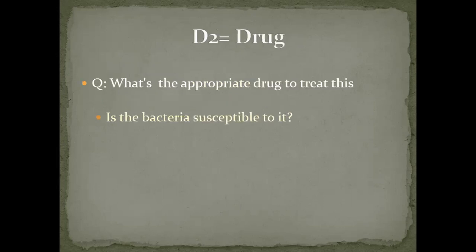The second D is the drug. What is the appropriate drug to treat this? Always, before prescribing any antibiotic, ask yourself: is the bacteria susceptible to it or not? For instance, if the patient comes with community-acquired pneumonia, we know the most common organism is Streptococcus pneumoniae, and it is susceptible to ceftriaxone. So I would never prescribe someone with community-acquired pneumonia piperacillin-tazobactam or meropenem. Always think about the underlying bacteria causing the disease, then prescribe the appropriate antibiotic.